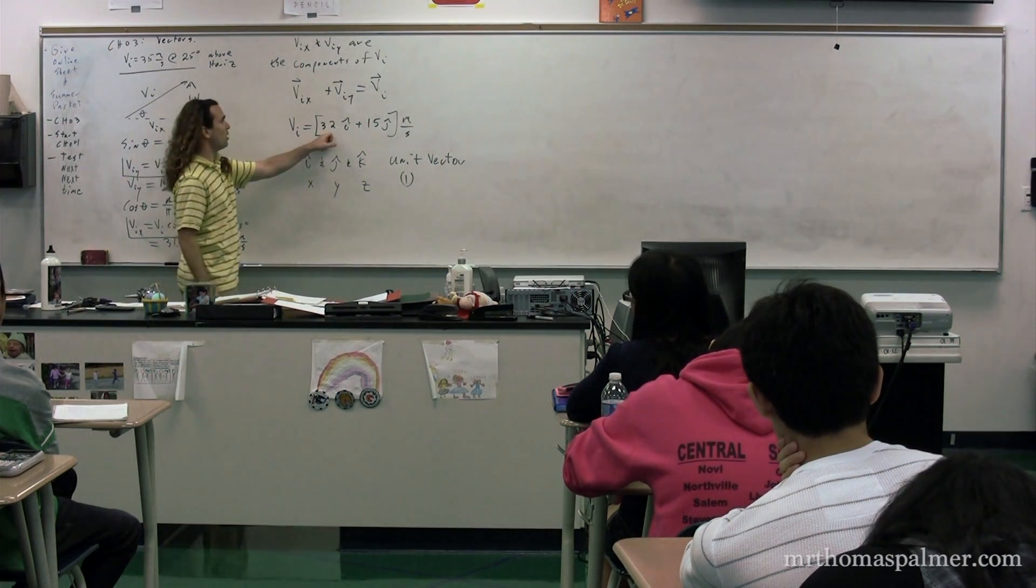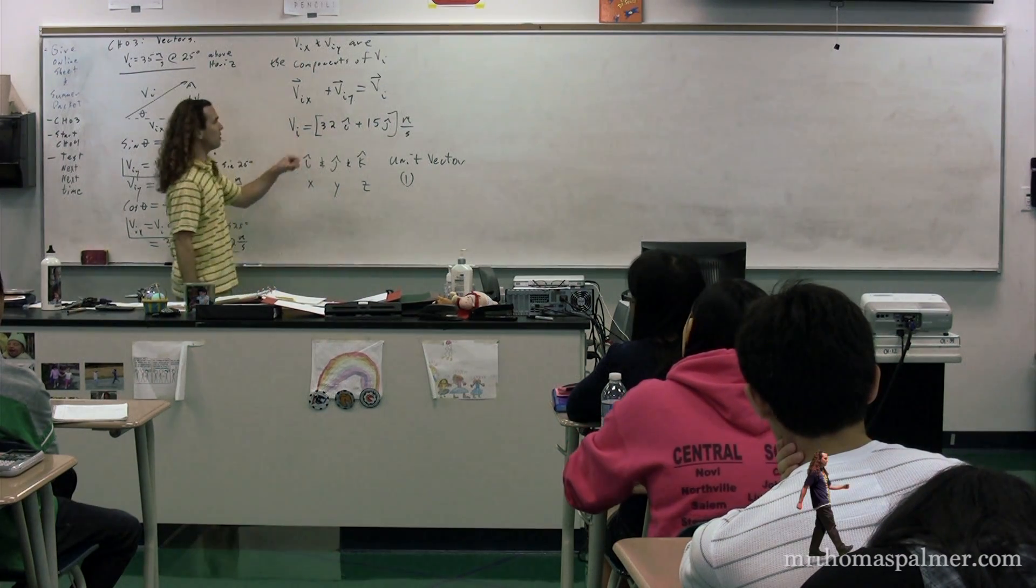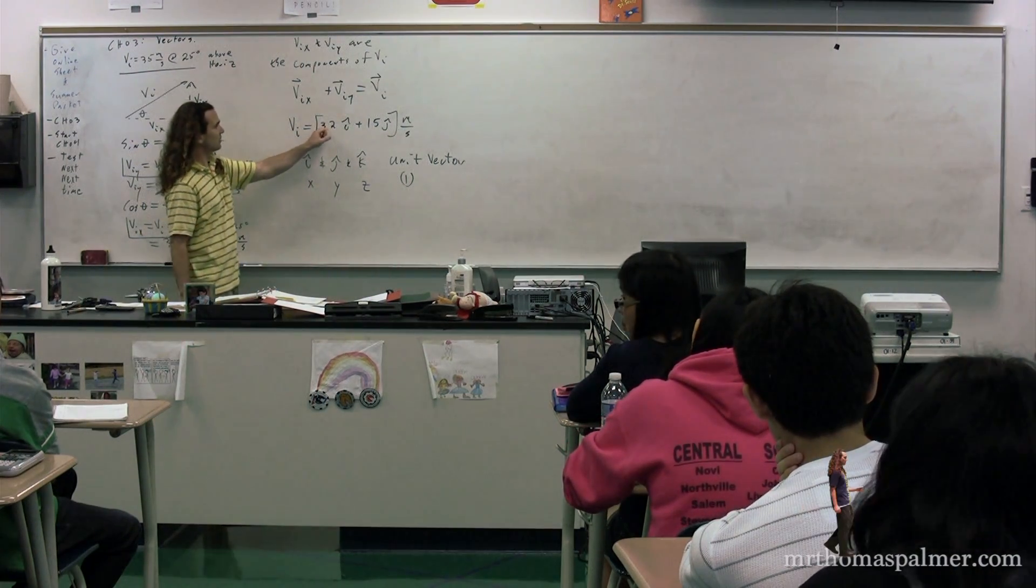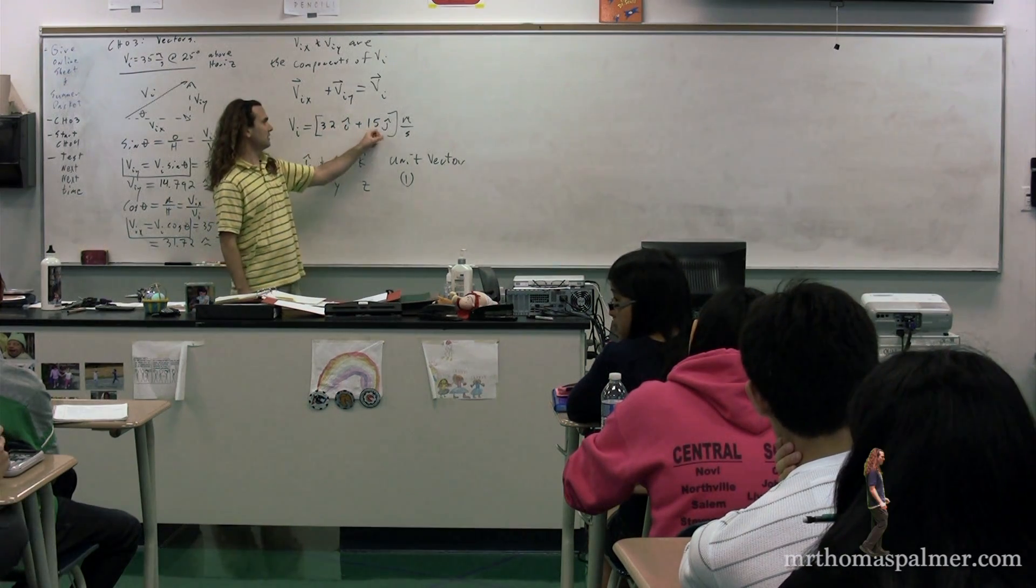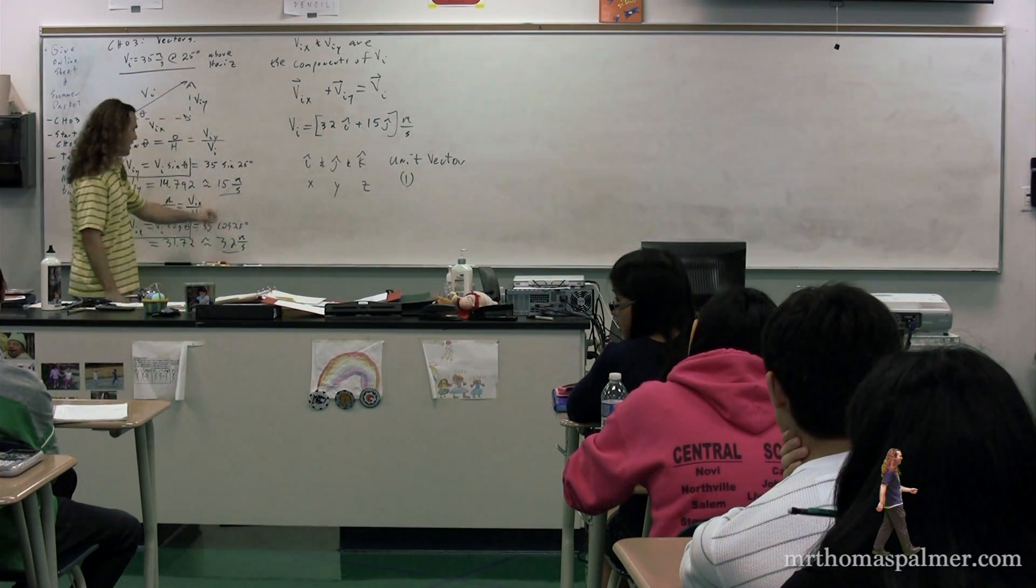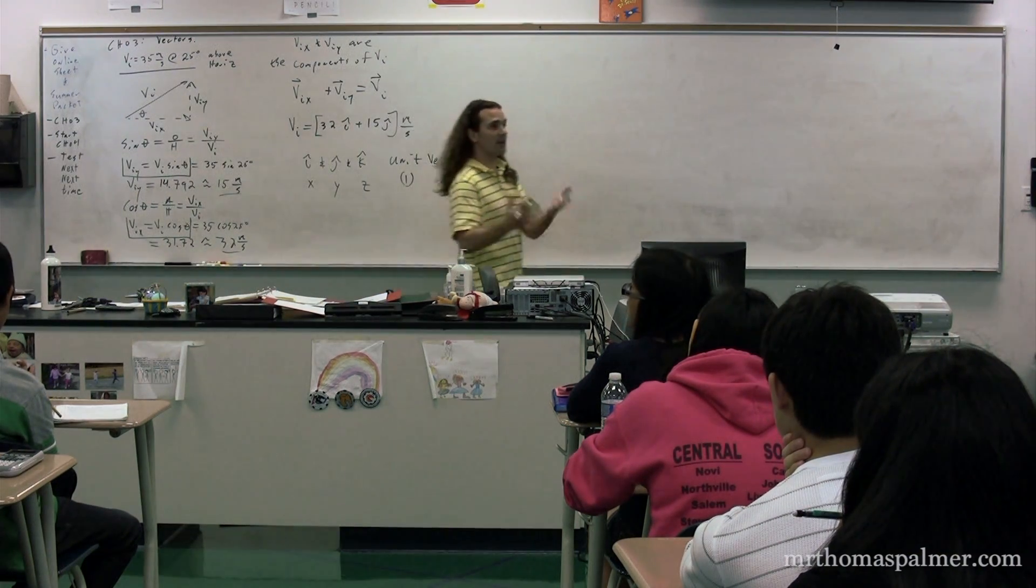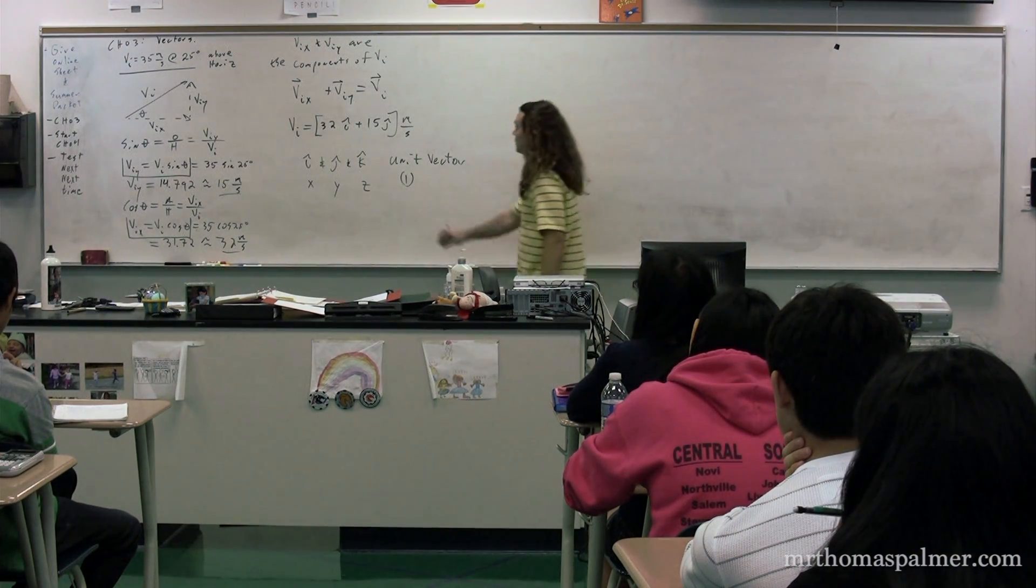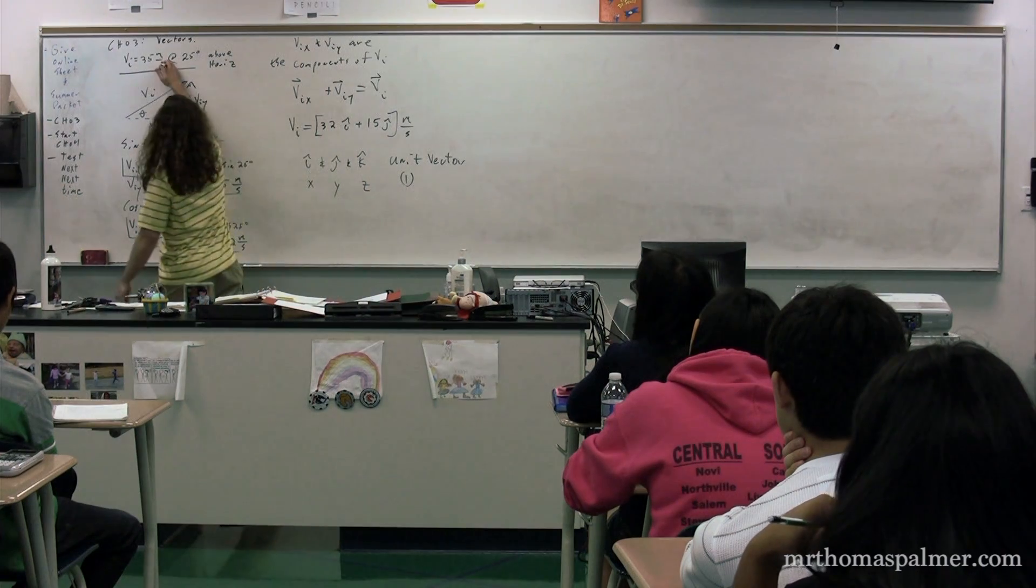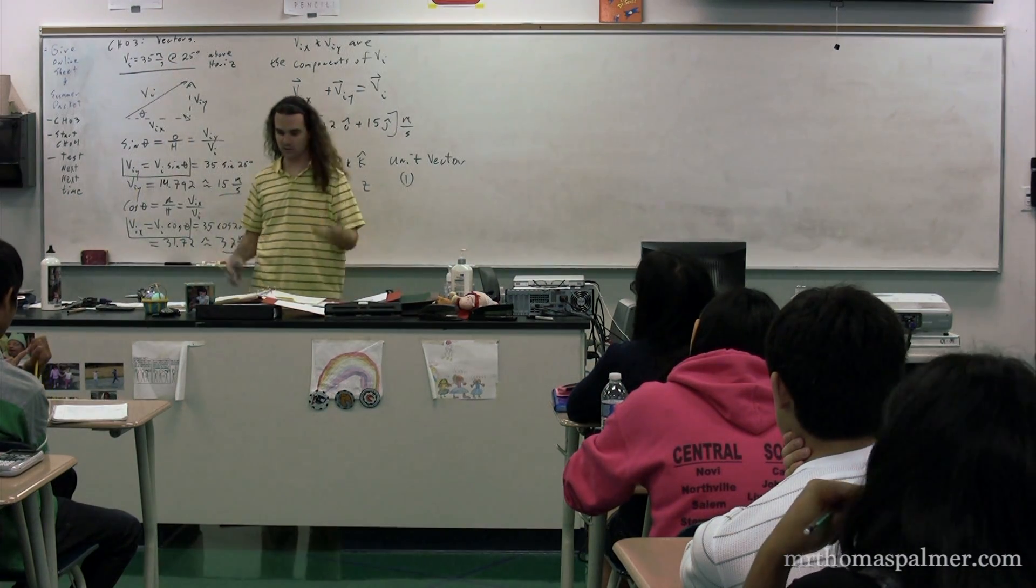So, you can see the components of vector are composed of the unit vectors 32i and 15j. If we were to add those together, we would get the vector 35 meters per second at angle 25 degrees above the horizontal. They mean the same thing. This statement and this statement. They're just drawn out differently.